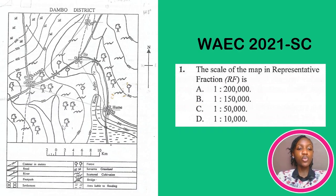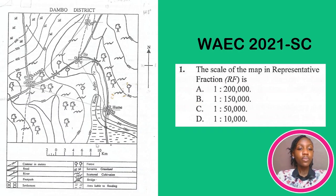If this interval is one centimeter, I now decide to look at the interval between the numbers, and it's going in terms of two: zero, two, four, six, eight, ten. So this is a map of one centimeter to two kilometers.